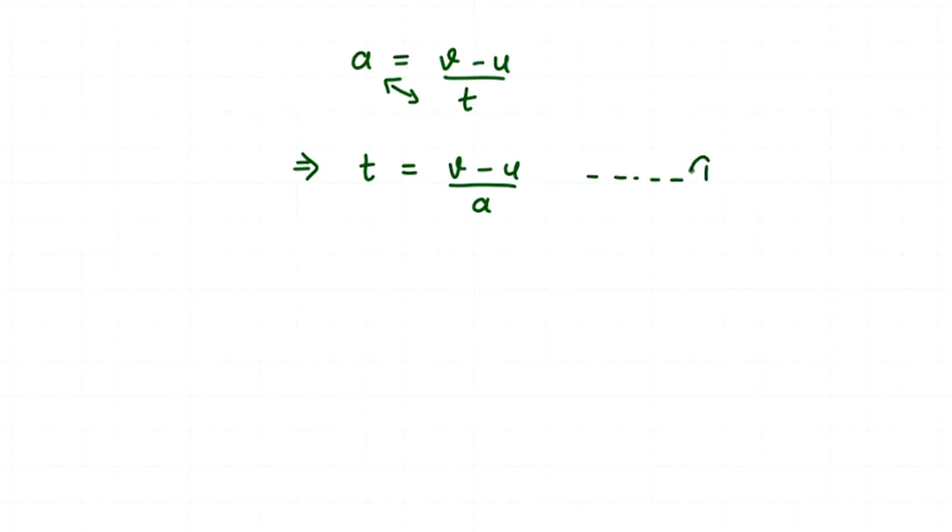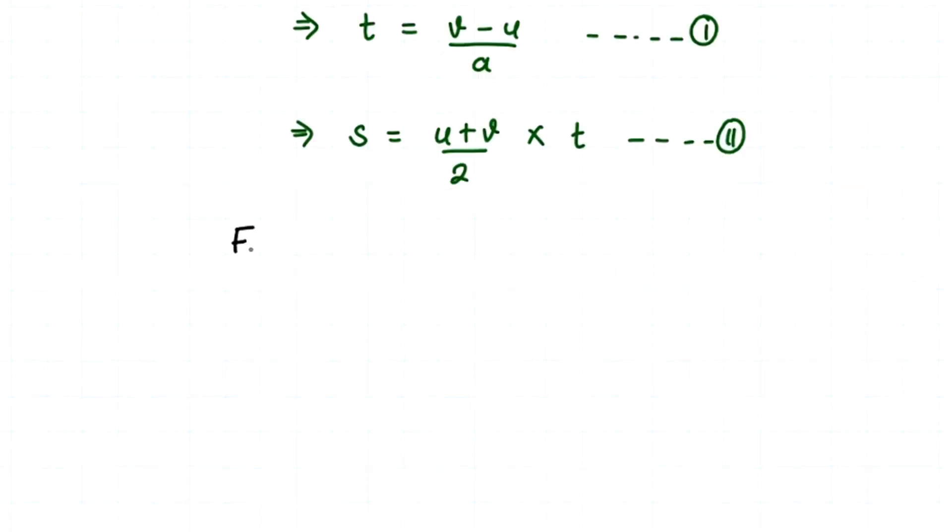Let's assume this as our first equation. And then the second equation that we will be using is s equals u plus v divided by 2 times t. So let's assume this as our second equation.